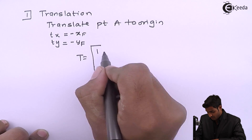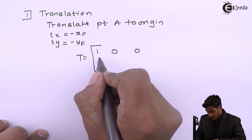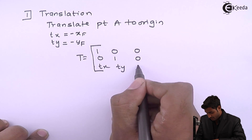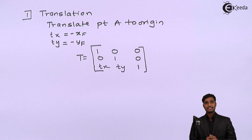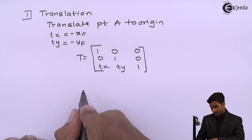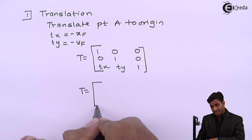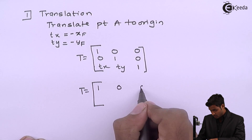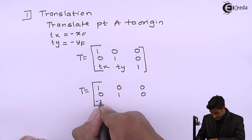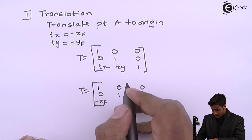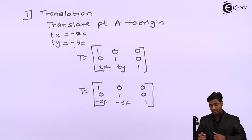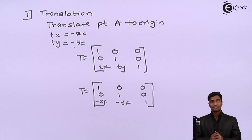So Tx will be minus Xf and Ty will be minus Yf. The standard translation matrix is: [1, 0, 0 / 0, 1, 0 / Tx, Ty, 1]. Replacing the values of Tx and Ty, we get the translation matrix T1 as: [1, 0, 0 / 0, 1, 0 / -Xf, -Yf, 1]. This is the translation matrix T1.